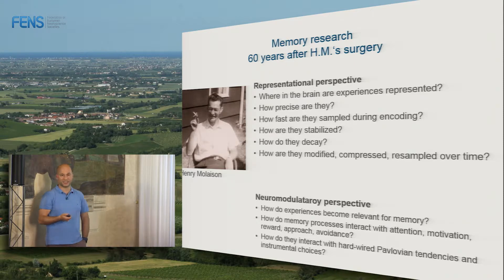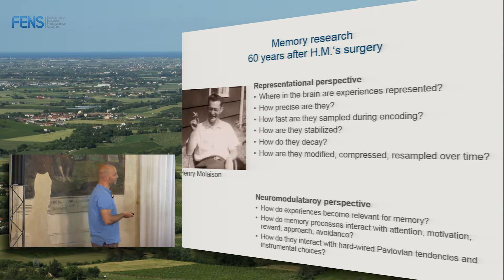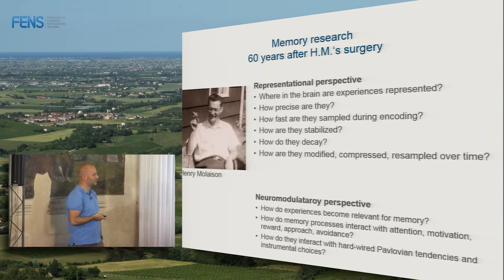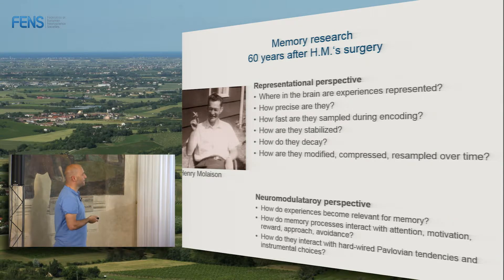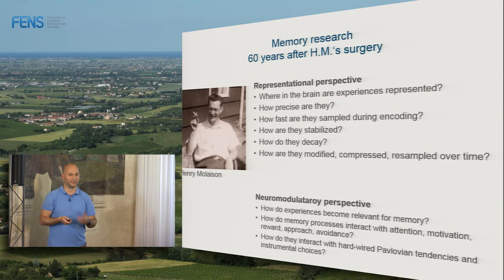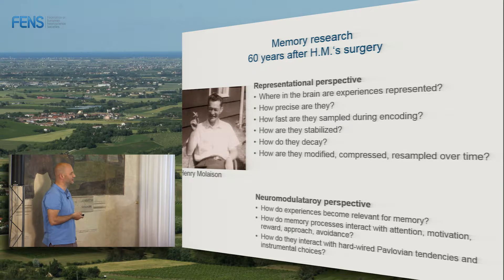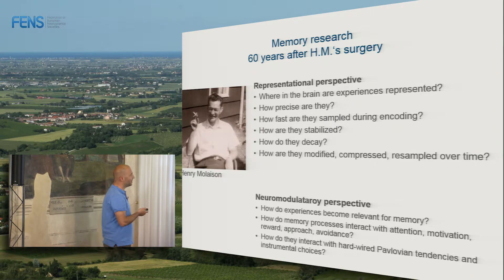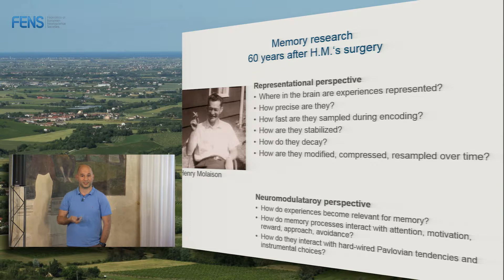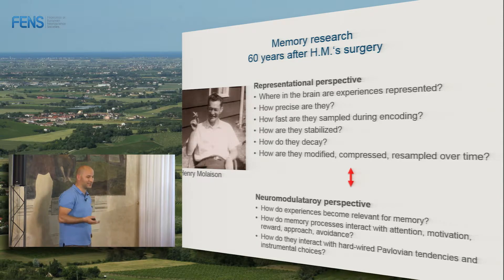There is a representational perspective, and then there is another perspective which is a more neuromodulatory perspective. Here the relevant questions are: how do experiences become relevant in the first place to be encoded in memory? How do they interact with attention, motivation, reward, approach and avoidance? And how do they interact with the tendencies enshrined in basal ganglia circuits, such as Pavlovian tendencies and instrumental choices? So aside from the representational perspective, we have this very complex neuromodulatory perspective that we still don't understand, and the interaction between the two is very relevant.